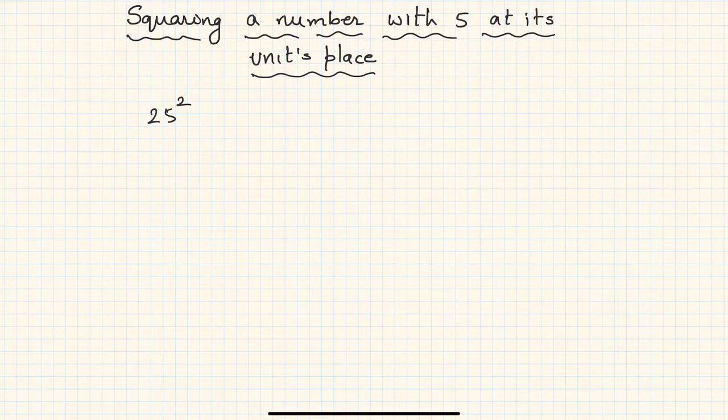If you see, 25 has the units place as 5, right? It is ending with 5. If such numbers are there, then how do we find out the square very quickly? The technique is very simple. If there is a number ending with 5 at its unit place, then the last two digits of the square will definitely be 25. So you plain and simple write 25.